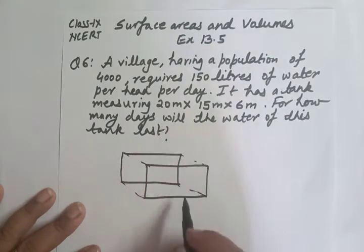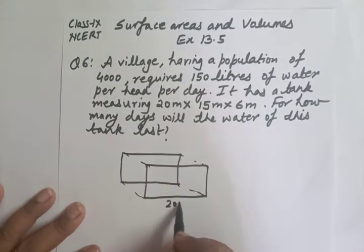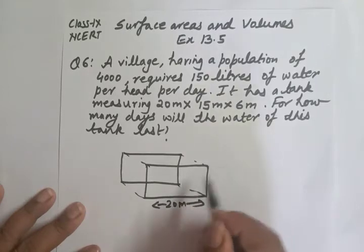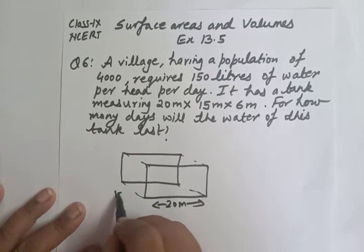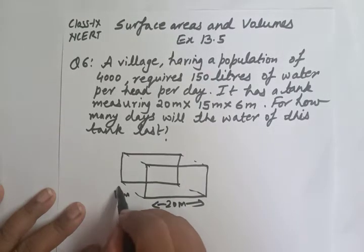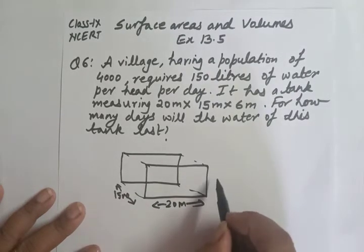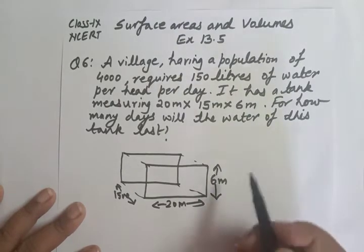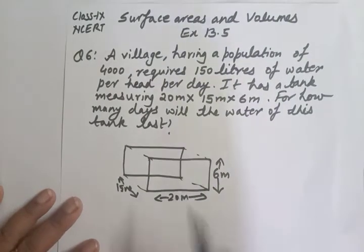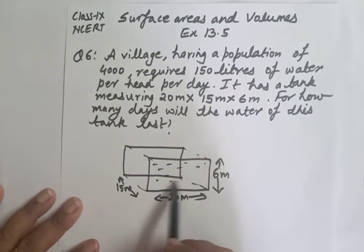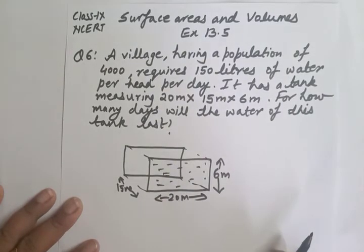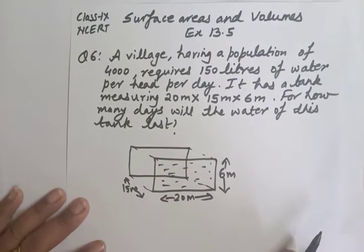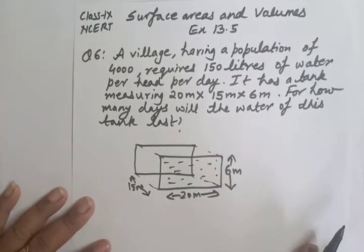The length is 20 meters, the width is 15 meters, and the height is 6 meters. The water is inside the tank, so first of all we will find out the volume of the tank — that is, the capacity of the tank, i.e., how much water it can hold.